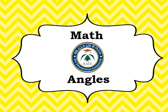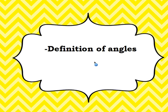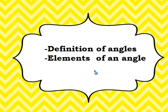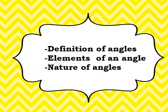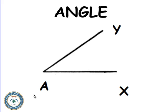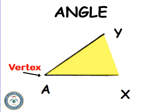An angle is the space between two intersecting half lines. AX and AY are intersecting half lines; they intersect at A. A is called the vertex of the angle, and the space between them is the angle itself.